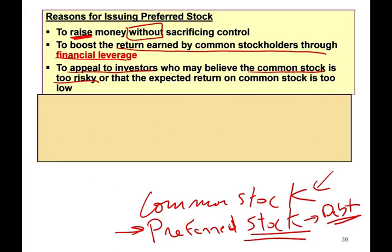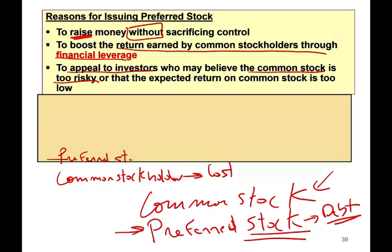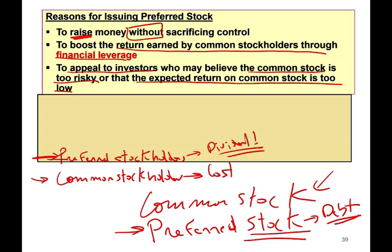Also, to appeal to investors who may believe the common stock is too risky. In terms of liquidation, in case something happened to the company, there's a line that people will stand in to get their money. Common stockholders are the last people in the line. Right before them we have the preferred stockholders, who have a priority position in case of liquidation. Also, preferred stock usually pays a dividend, while common stock may not, so the return is higher.